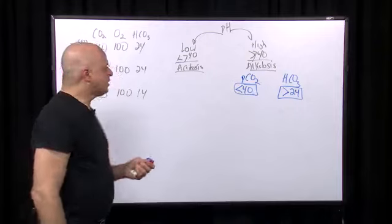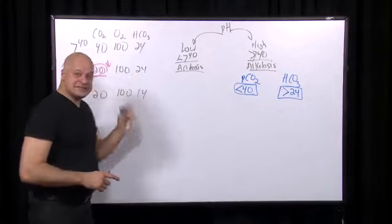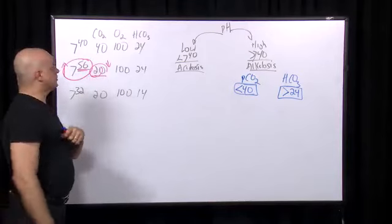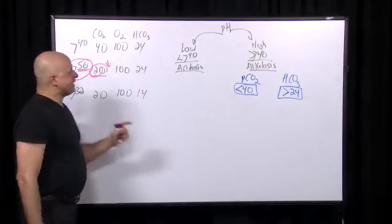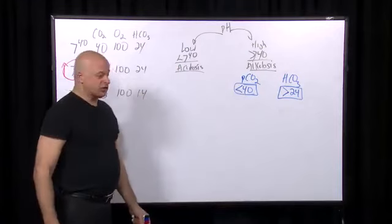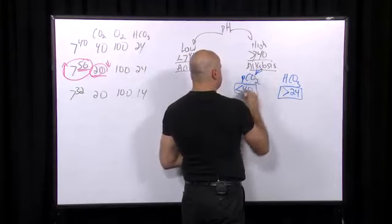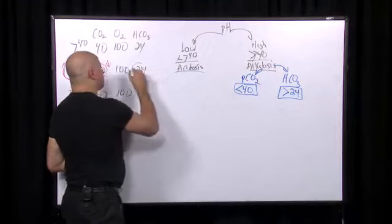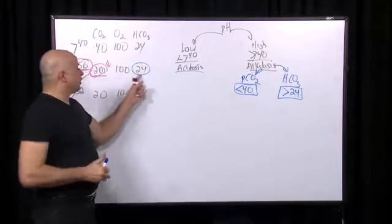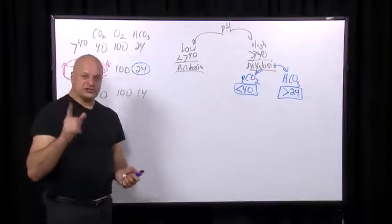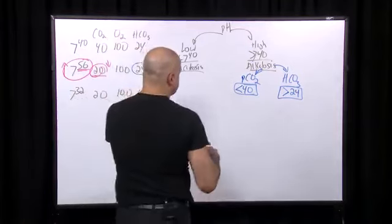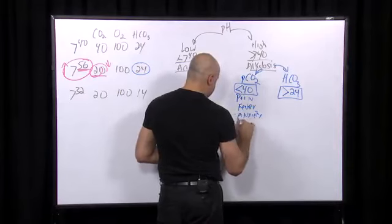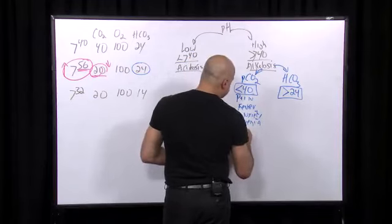A normal bicarbonate means this is an acute, or uncompensated, respiratory alkalosis. If it were chronic it would be compensated. Acute causes include pain, fever, anxiety, sudden anemia, running, or an acute asthma attack — anything that makes you breathe faster. It takes 12–24 hours for the kidneys to compensate.